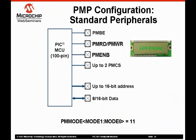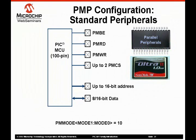Let's look at how the PMP can interface with some of the standard parallel peripherals. The mode bits in the PM mode register allow the PMP to be configured to operate in two master modes and two slave modes. When mode 1 and mode 0 bits are configured to 1-1, the PMP is configured to interface with Motorola peripherals and LCDs. In this mode, the read and write signals are controlled on the same pin and a third pin is used as enable. When mode 1 and mode 0 are configured to 1-0, the PMP can be used to interface with Intel peripherals and memory devices, and the read and write pins are separated.